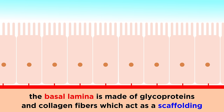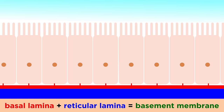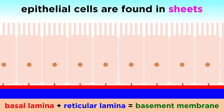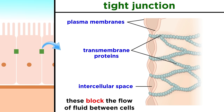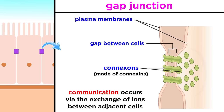On the other side, the basal surface of these cells is attached to something called the basal lamina, which is not made of cells, but rather glycoproteins and collagen fibers, which act as a kind of scaffolding. This is adjacent to the reticular lamina, and these two components together form the basement membrane. Supported by this basement membrane, epithelial cells will typically be found in sheets right up next to each other. They are often bound together by desmosomes, which connect adjacent cells with filaments. Depending on the specific function of the tissue, there can also be tight junctions, which block the flow of fluids between cells, and gap junctions, which are pores that connect adjacent cells, allowing for communication via the transmission of ions that can carry electric current.